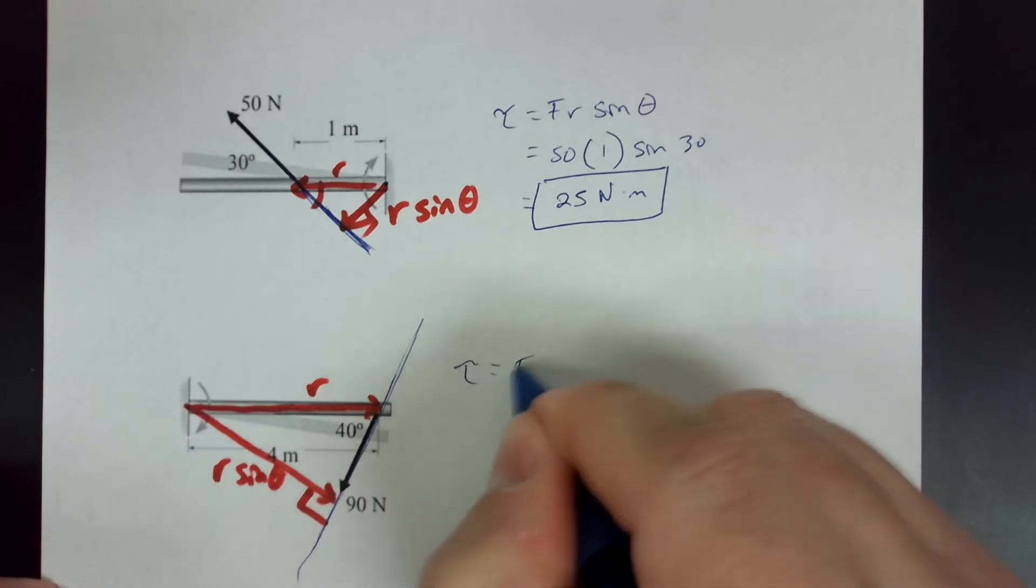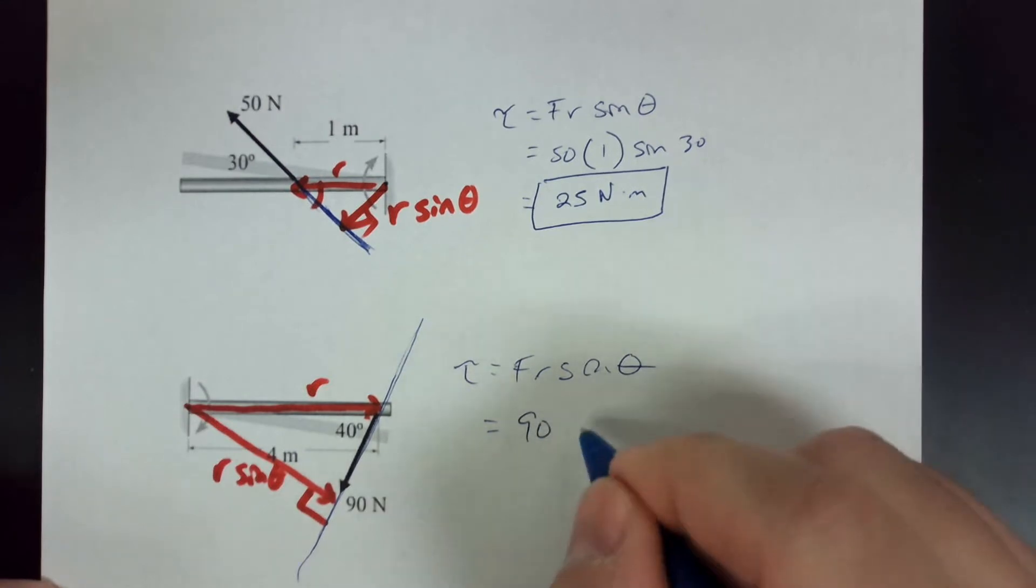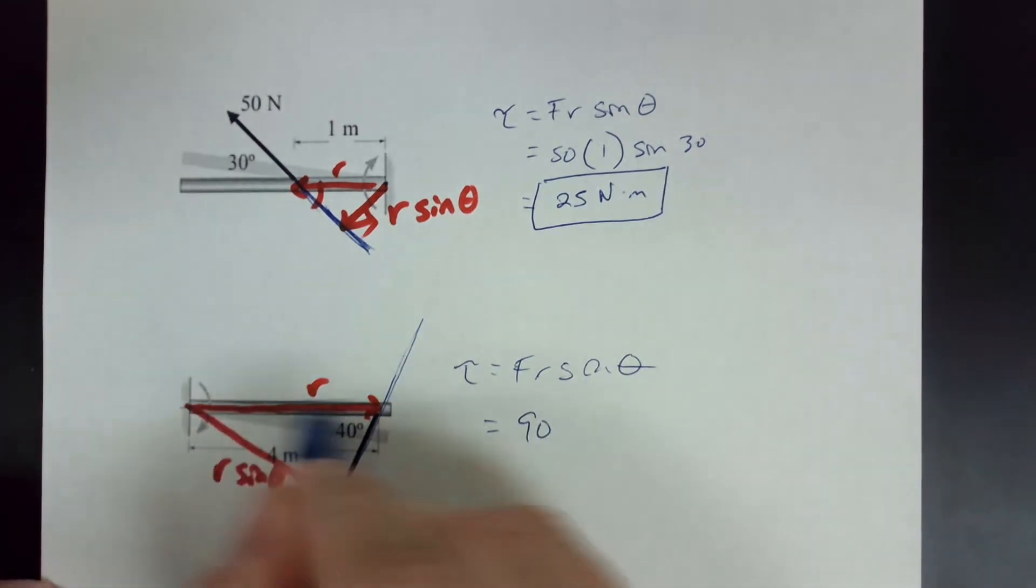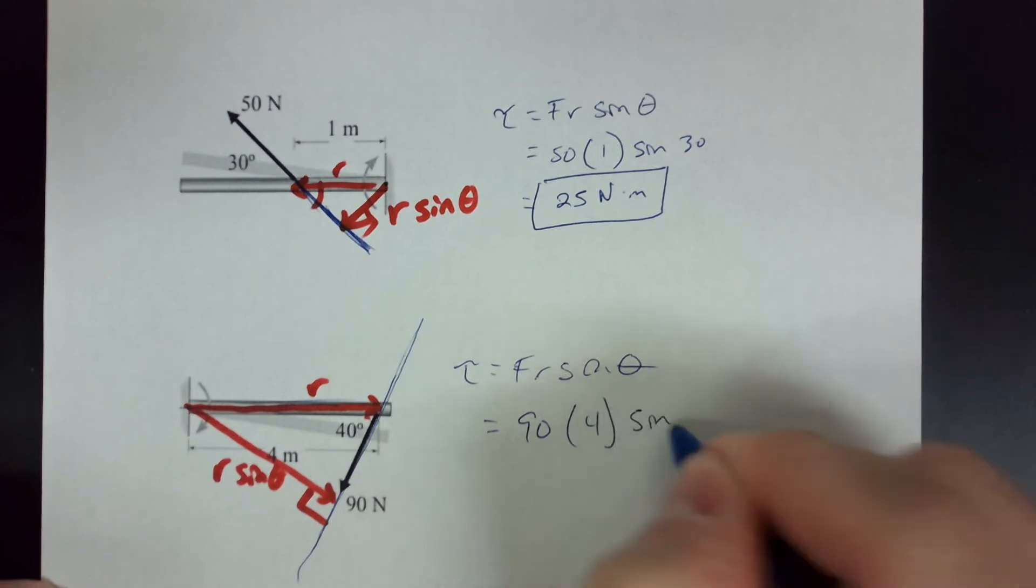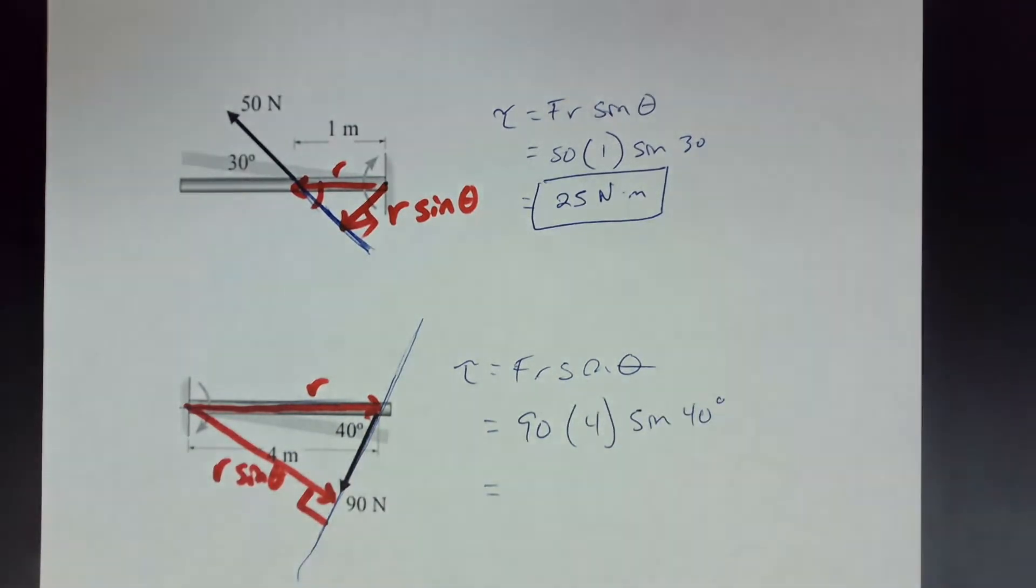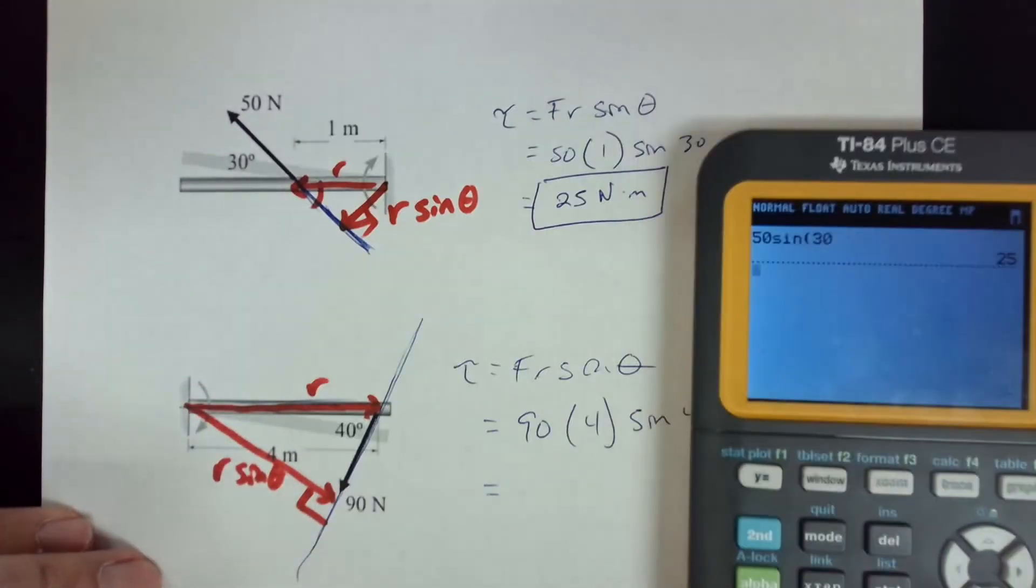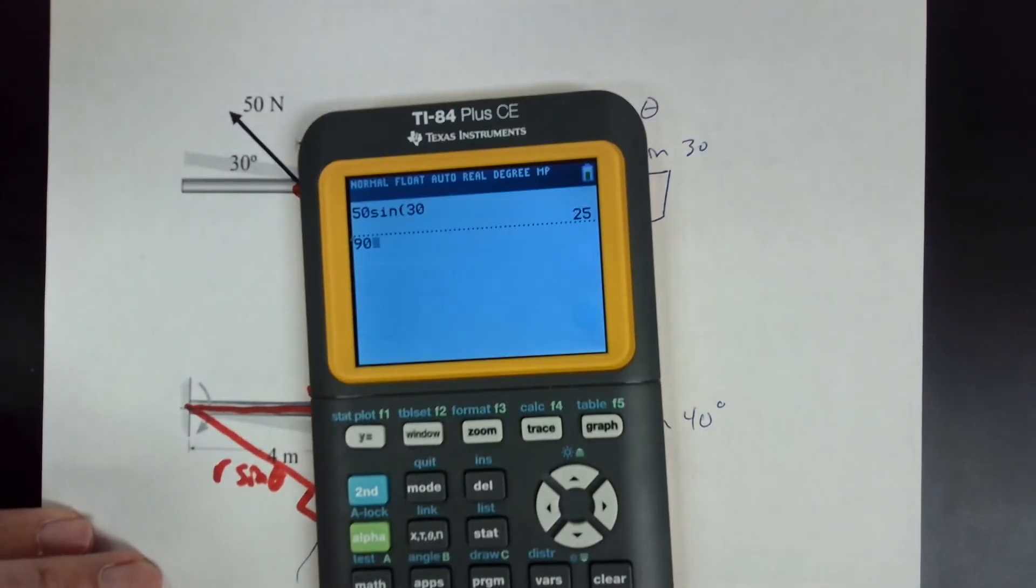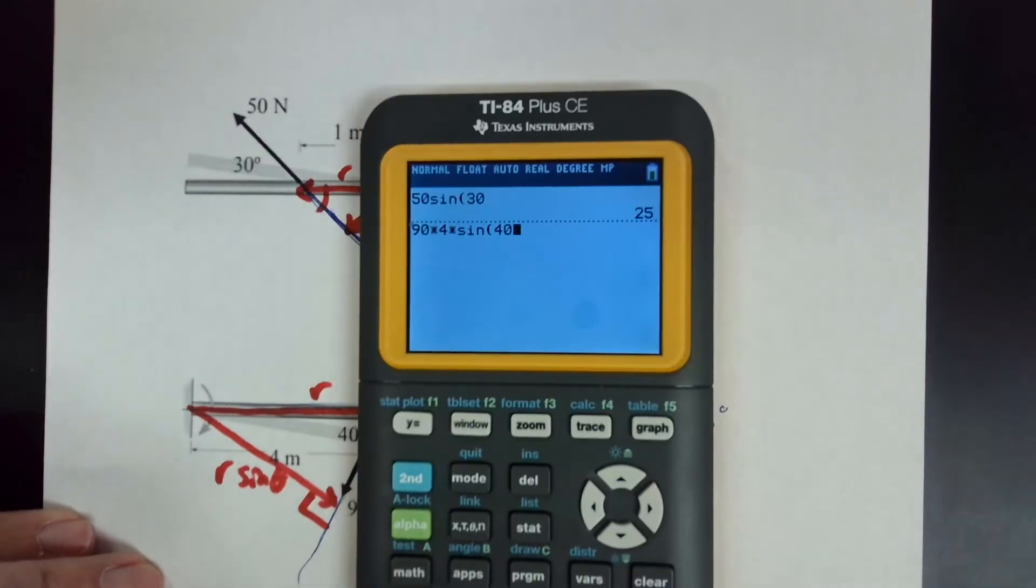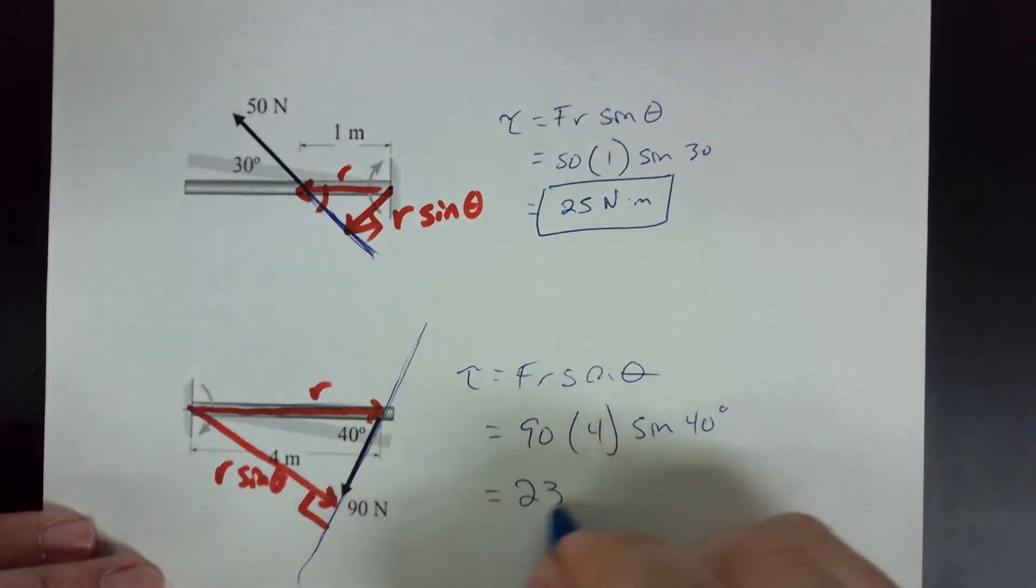So torque is FR sine theta. The force is 90 times R is 4, times 4 times sine of 40 degrees. And if you do that, 90 times 4 times sine of 40 degrees gives me 231.4 Newton meters.